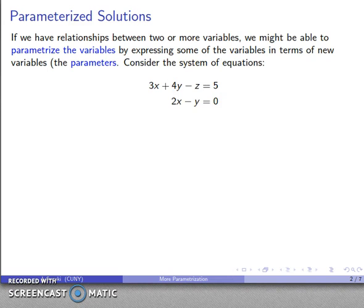For example, let's take the system of equations 3x plus 4y minus z equals 5, 2x minus y equals 3, and find a parameterization of the solutions. I have three variables: x, y, and z. So what I might do is set up new variables and say x equals s, y equals t, z equals r.